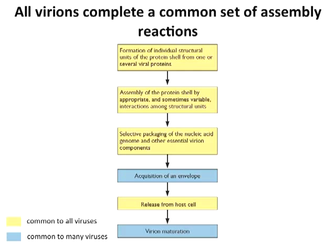Putting together viruses. Assembly of viruses occurs in a very ordered fashion. If it didn't, things would be a mess. Most viruses undergo a common set of assembly reactions shown here. You have to make the viral proteins first and assemble them into structural units — one or several proteins. You have to assemble the shell, which happens spontaneously, put the genome in the shell, and for some viruses an envelope is acquired. The virus has to be released from the host cell, and some viruses actually mature after they get out of the host cell.